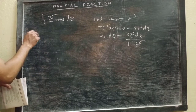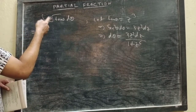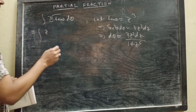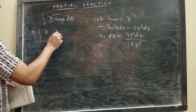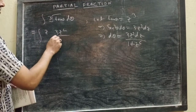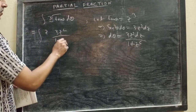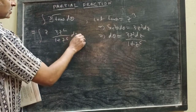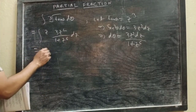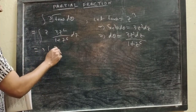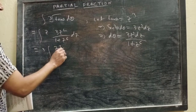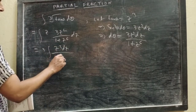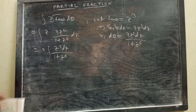So here it becomes: the cube root of tan θ is z and dθ is 3z² dz / (1 + z⁶), giving 3z³ dz / (1 + z⁶).